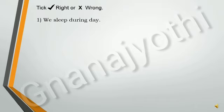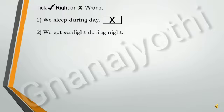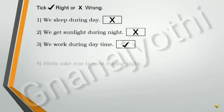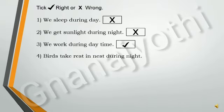Now let us check right or wrong. Question 1: We sleep during night — it is correct. Question 2: We get sunlight during night — it is wrong, because we get sunlight during day time. Question 3: We work during day time — it is right. Question 4: Birds take rest in nest during night — it is right.